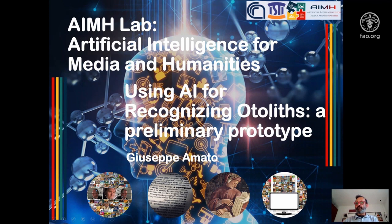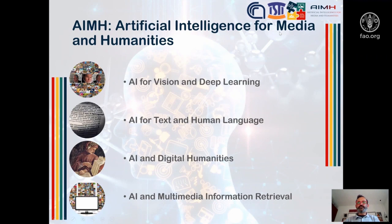We basically built a very preliminary prototype able to do this. Let me say a few words about the Artificial Intelligence for Media and Humanities Lab, which works on artificial intelligence applied to four different application domains: artificial intelligence for vision and deep learning, artificial intelligence for text and human language, artificial intelligence for digital humanities, and artificial intelligence for multimedia information retrieval.